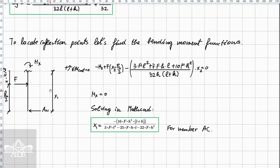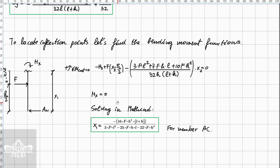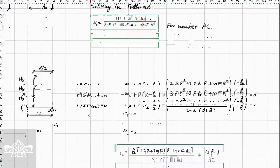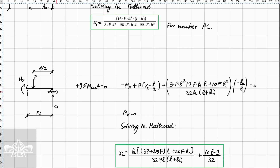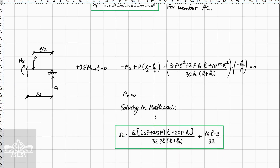At the end of the video, numerical values will be substituted and compared with finite element software, which will be modeled in the next video. For the other member, we take sum of moments at the cut, and by setting Mx equal to zero in Mathcad we obtain the parametric inflection point location for member BC.